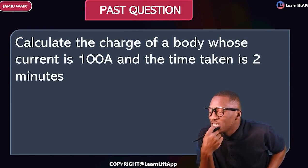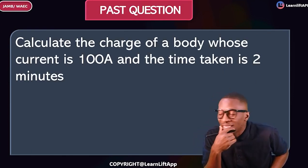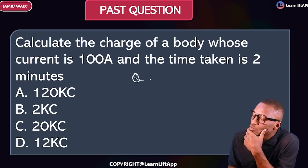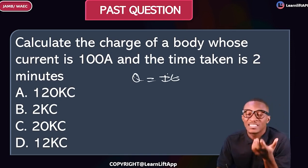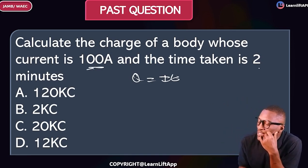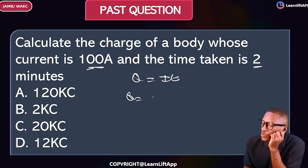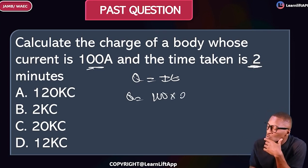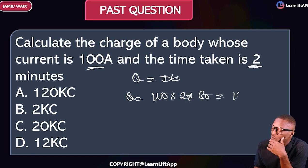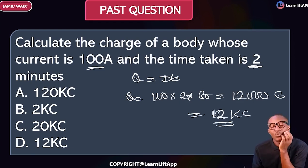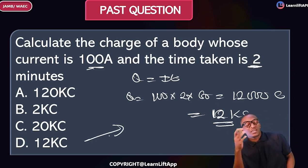Here's a past question: calculate the charge of a body whose current is 100 amperes and the time is 2 minutes. We know Q = IT. Current is 100 amperes, and time must be converted to seconds: 2 minutes × 60 = 120 seconds. So Q = 100 × 120 = 12,000 coulombs, which equals 12 kilocolumbs. That makes option C the answer.